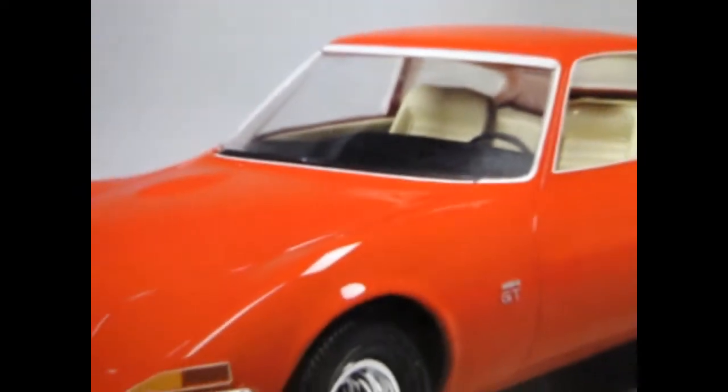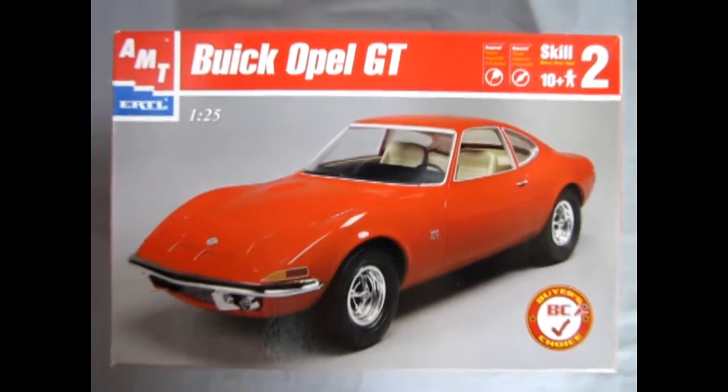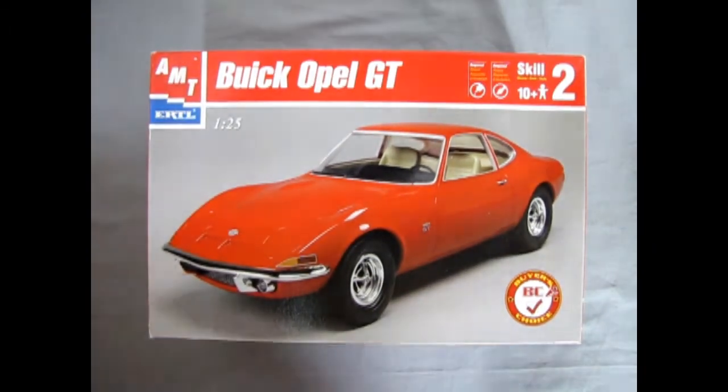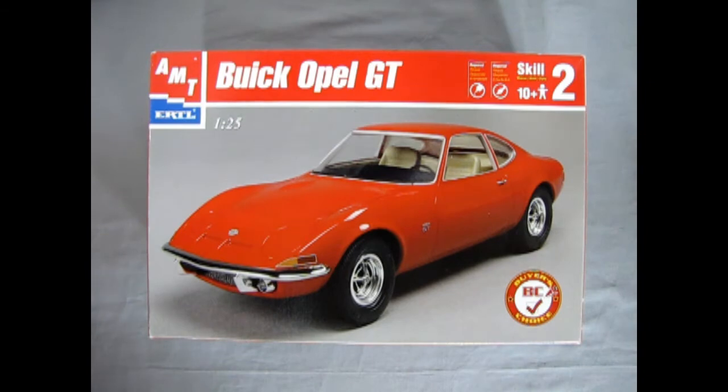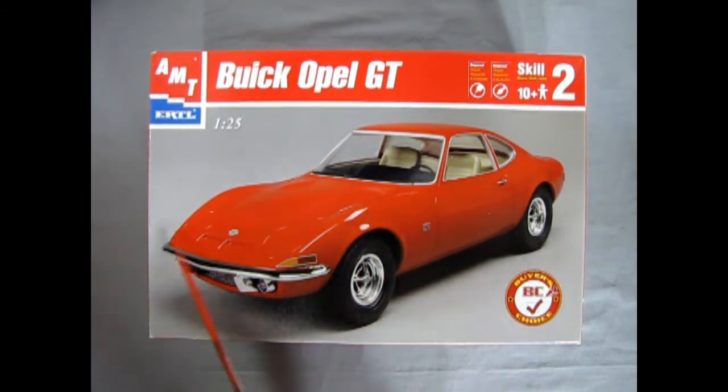So now we roll back the clock all the way to 1968 where we get to check out the amazing Buick Opel GT which was also known as the baby Corvette. And you can see that it's very apparent in the way of the coke bottle type front fenders and just the general sports car-ness of this thing.